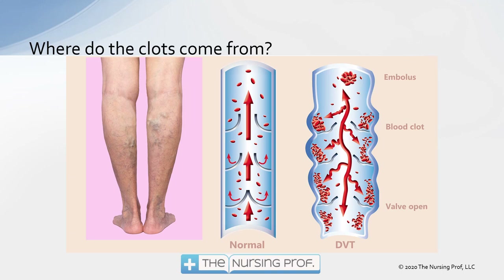Unless we have adequate pumping of the calf muscle — meaning people are getting up and walking around — we can have clots forming in the lower extremity. The clot breaks free, comes back up through the venous circulation, and then goes through the right side of the heart.